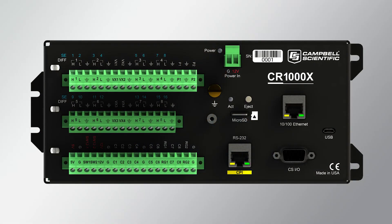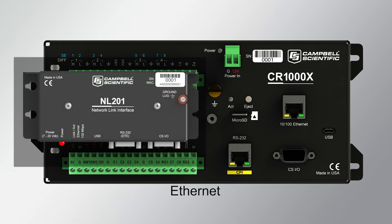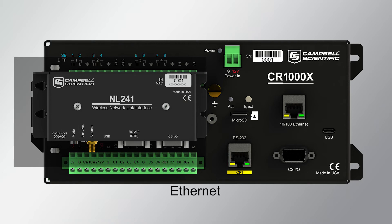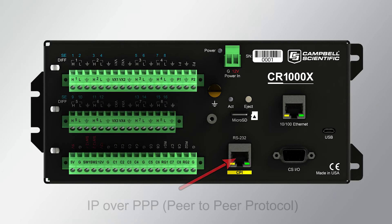Data loggers can support multiple IP interfaces, not just Ethernet. Each interface will have its own unique IP address, subnet mask, and gateway address. For example, on the CR1000X, IP interfaces include an Ethernet port and a CSIO port, which can connect to an external Ethernet interface such as an NL201 or NL241 wireless Wi-Fi link. In addition, IP over PPP, peer-to-peer protocol, is available with a CPI to RS-232 adapter or with any of the data logger's TX-RX pairs. Finally, the USB port supports RNDIS, or Ethernet over USB, for connection to a local network.